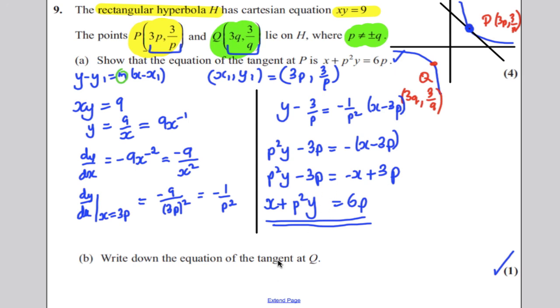with the very similar form of coordinates, is just going to be the exact same thing as this, but just p replaced by q. So you can write down straight away, x + q²y = 6q. So that's the equation of the tangent at the point Q.